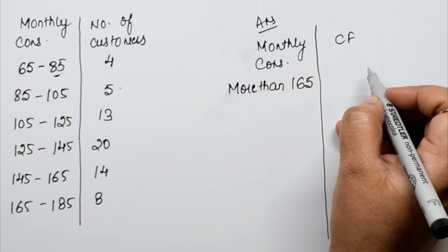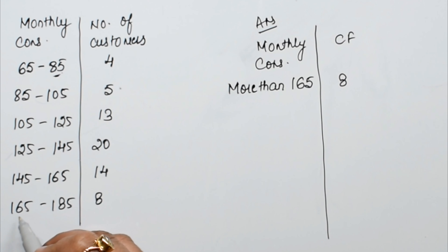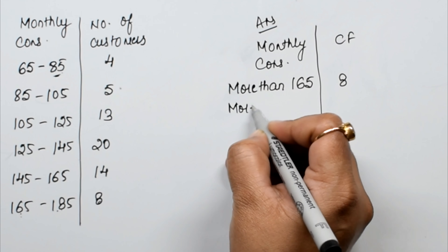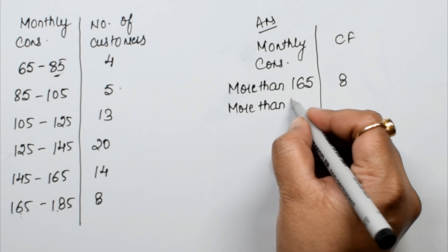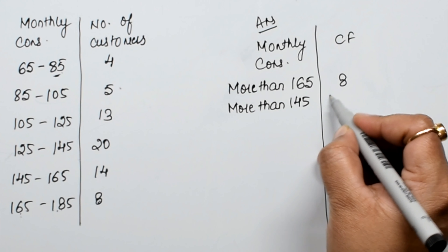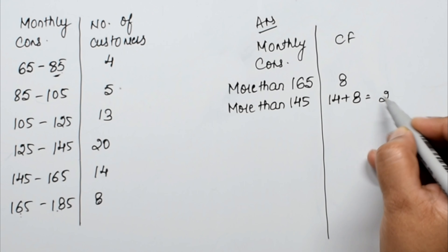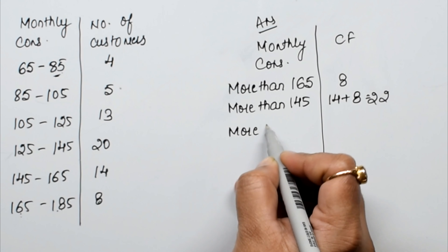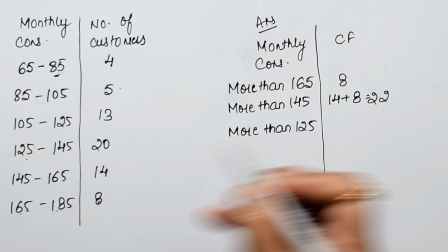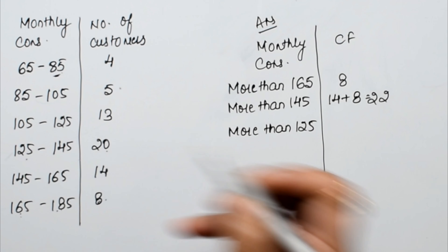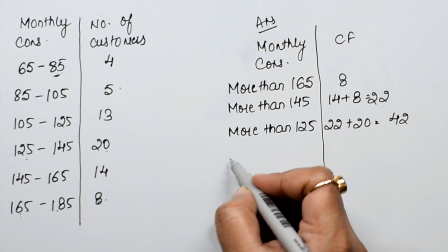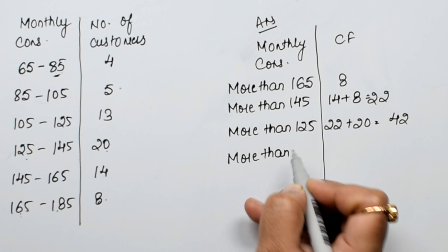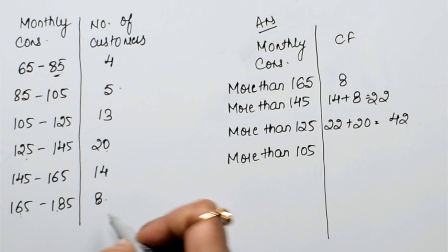So we write: more than 165 — that is 8. More than 145: 14 plus 8 is 22. More than 125: add 13, so 22 plus 13 is 35. More than 105: add the next frequency, so we get 42.